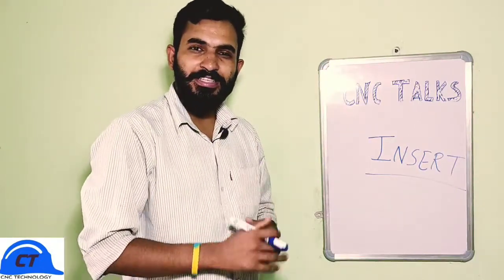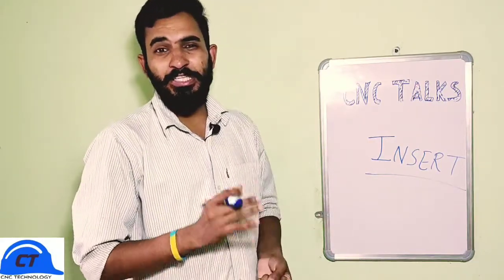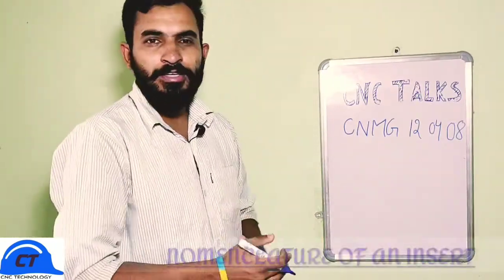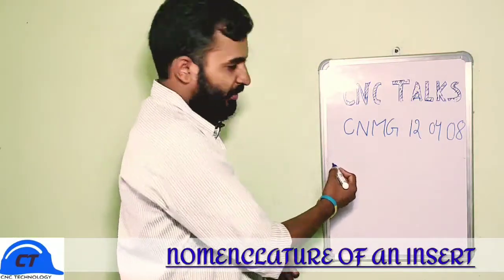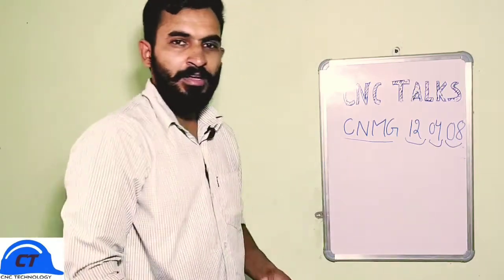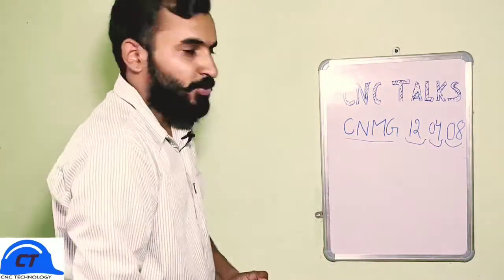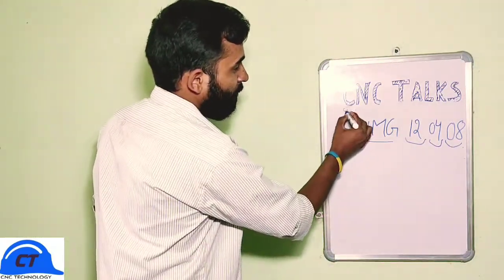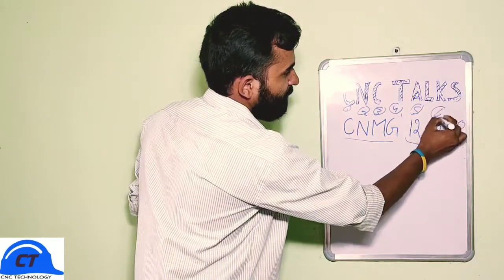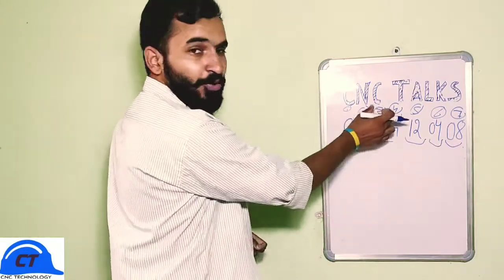The name of the insert describes the whole specification of that particular insert. Let's discuss the nomenclature of an insert. Consider a CNMG insert — in the name of an insert, there are basically 4 letters and 3 numbers. Each letter has its own meaning and each number has its own meaning. Let's give positions: number 1, 2, 3, 4, 5, 6, and 7.